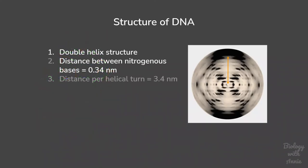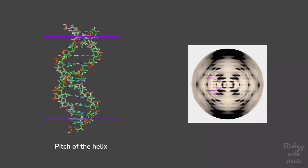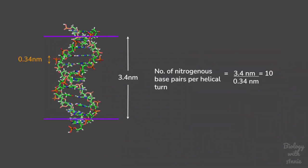The third feature which they noticed was that the helical turn repeats after every 3.4 nanometers. This is known as the pitch of the helix. The horizontal bars in the diffraction image correspond to the helical turns. Since the nitrogenous bases are stacked after every 0.34 nanometers, there would be 10 base pairs in one helical turn.